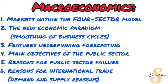For example, if you go with Macroeconomics, you only have to worry about the six possible essays on your screen. The first is the markets within the four-sector model, which relates to the circular flow topic. The second is the new economic paradigm, which is the same as smoothing out the business cycle. Then we have features underpinning forecasting, which also falls under the business cycle. Next are the main objectives of the public sector and reasons for public sector failure, falling under the public sector topic. Finally, there are the reasons for international trade — focusing on either demand or supply reasons — under the topic of foreign exchange markets.